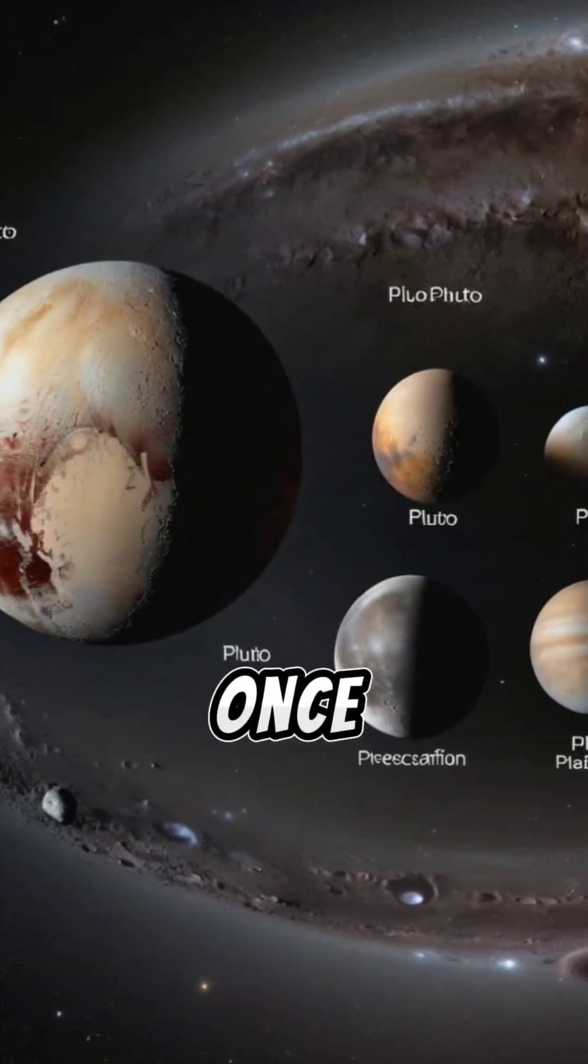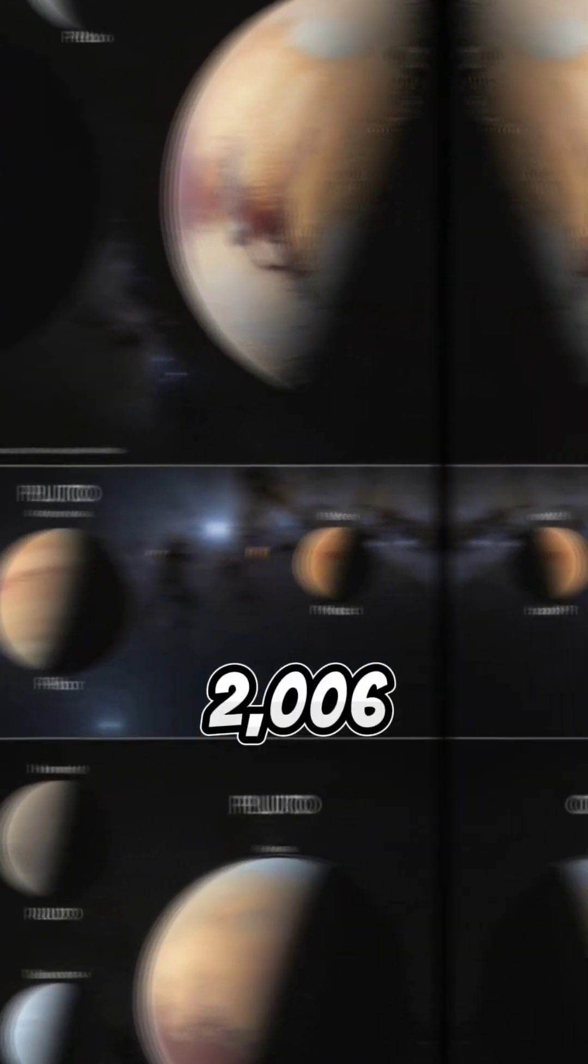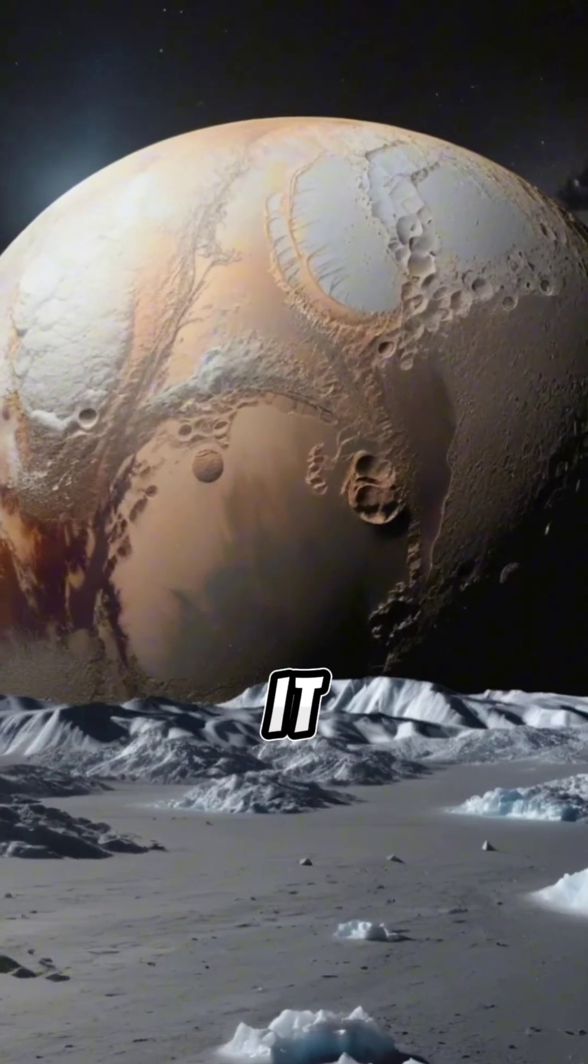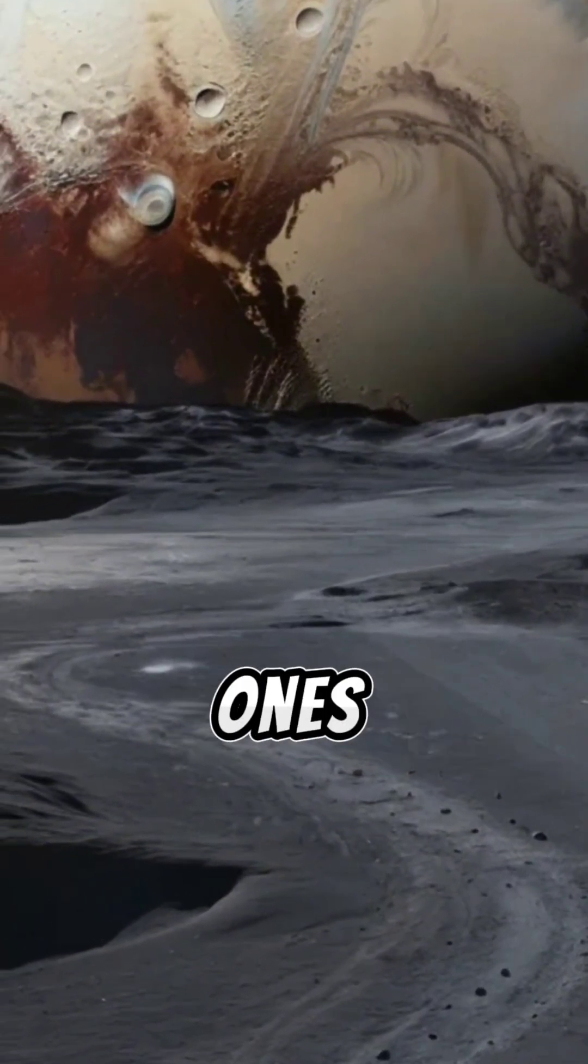3. Pluto, once deemed the ninth planet, was reclassified as a dwarf planet in 2006. Surprisingly, it features ice-spouting volcanoes instead of traditional lava-spewing ones.